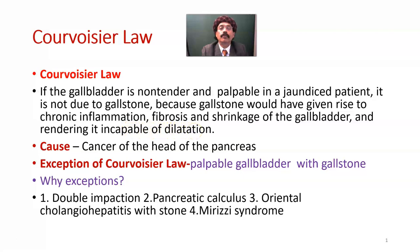What is the most common cause of Courvoisier's Law? Cancer of the head of the pancreas. In a patient with cancer of the head of the pancreas, the patient has jaundice — this is certainly obstructive jaundice — and the gallbladder is palpable, but it is usually not tender.